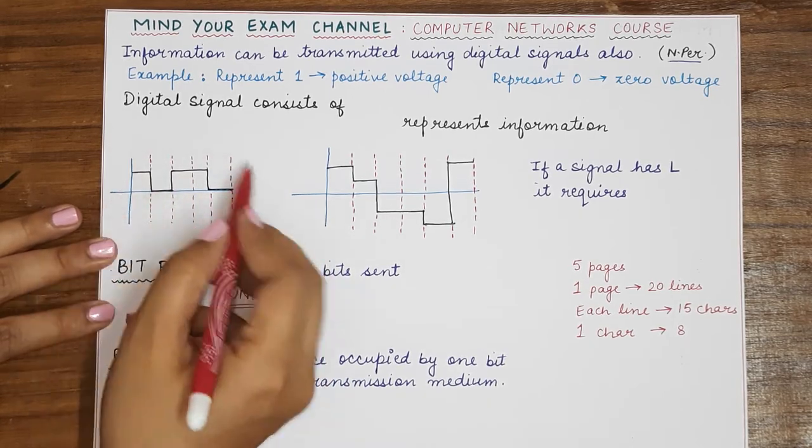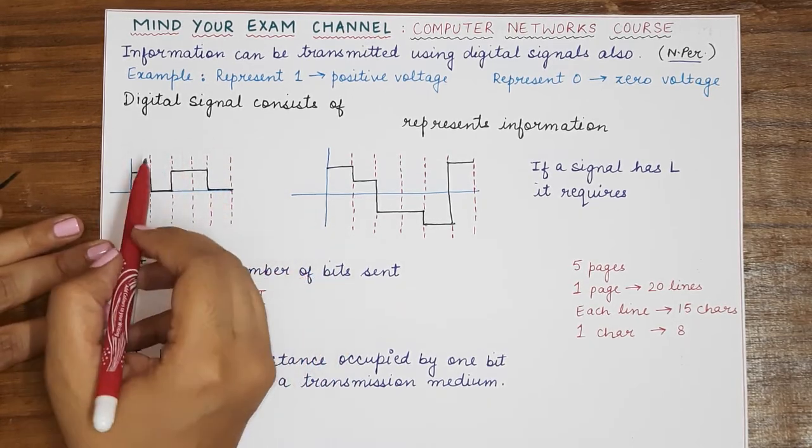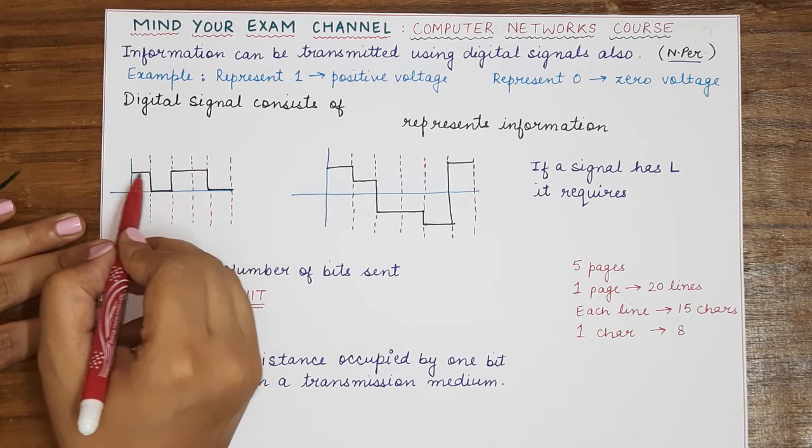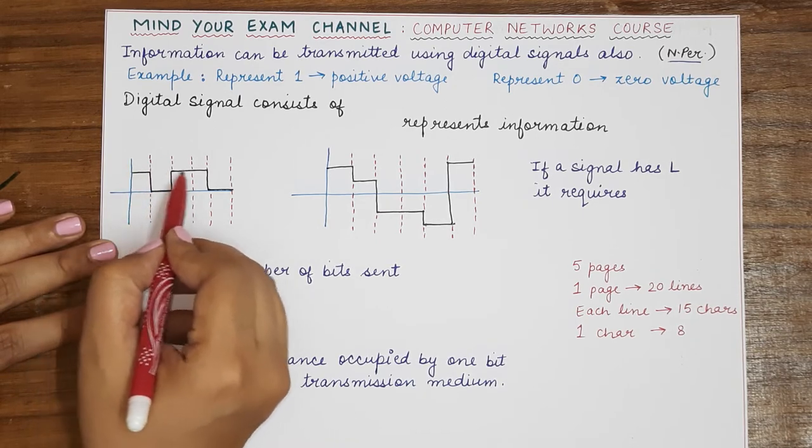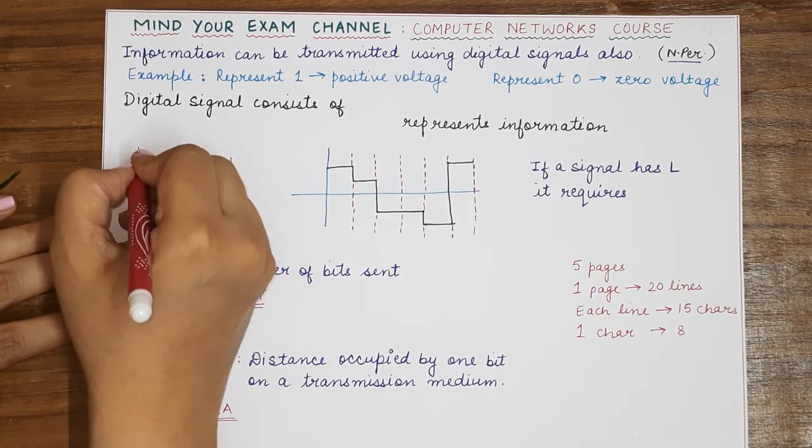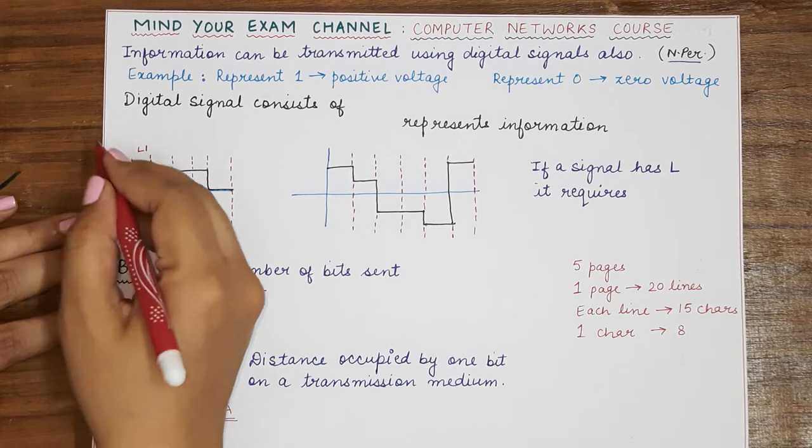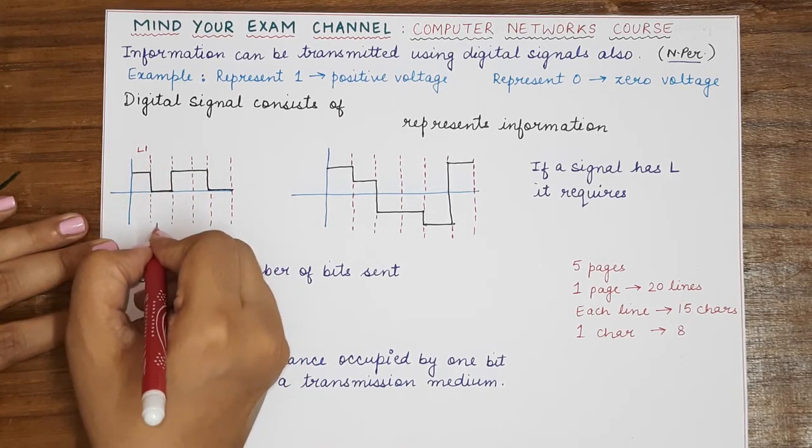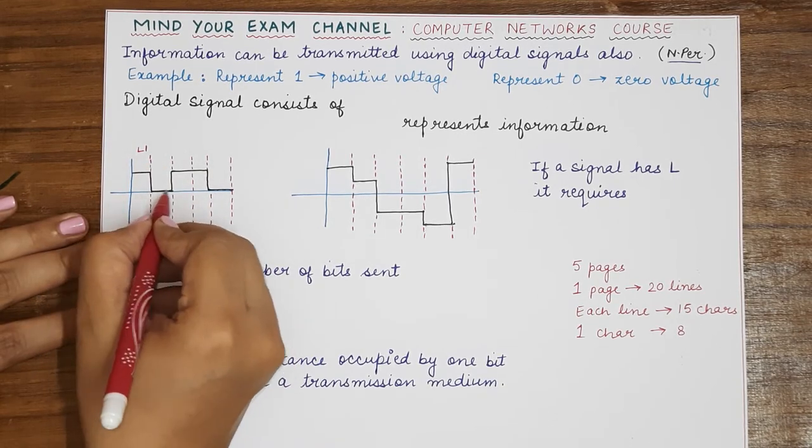So in this particular case, in this particular diagram what is happening is there are two levels of this digital signal. This is level one which is at a higher voltage and this is level zero which is at zero voltage.